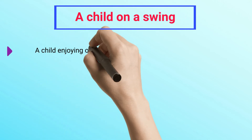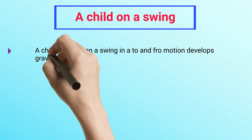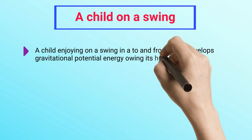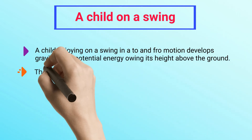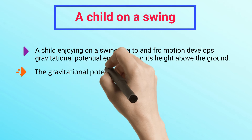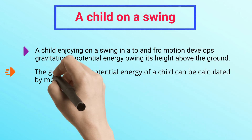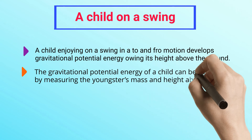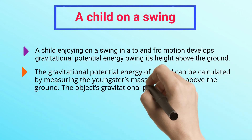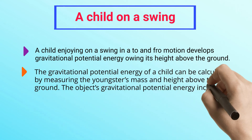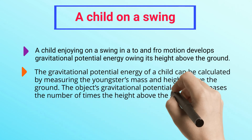A child enjoying a swing in a to-and-fro motion develops gravitational potential energy owing to its height above the ground. The gravitational potential energy of the child can be calculated by measuring the youngster's mass and height above the ground. The object's gravitational potential energy increases as the height above the ground increases.